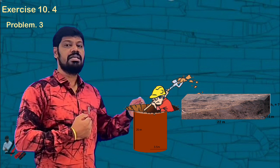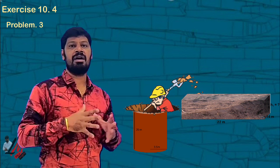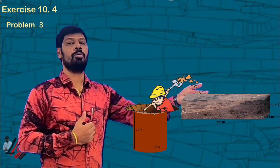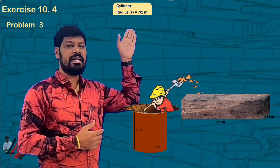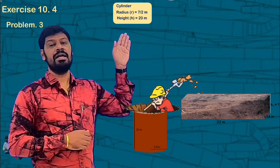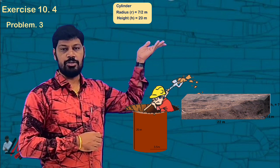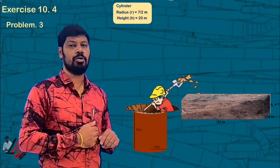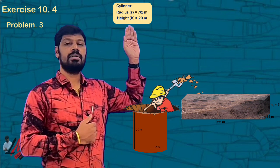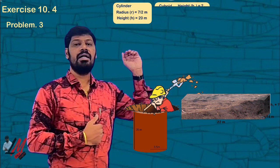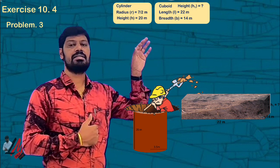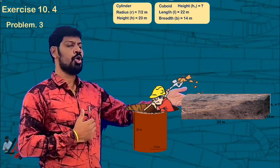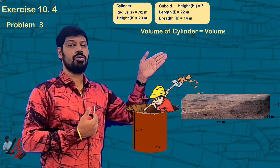Now we will discuss the 4th problem. Let us consider: H1 is equal to around 20 meters, coming to cuboid — length 22 meters, breadth 14 meters, height H1 is equal to question mark. So simple, this is a form of a solid. Volume of cylinder is equal to volume of cuboid.